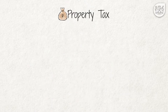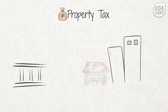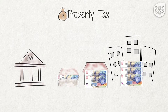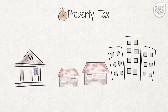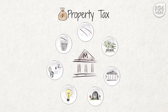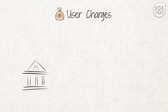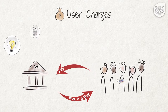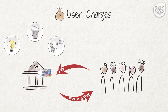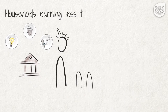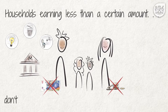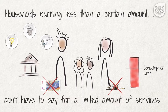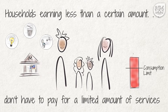Property Tax. Municipalities, other than district municipalities, also impose taxes on properties such as houses and businesses based on their values. Property taxes allow municipalities to subsidize the costs of services. User charges. Municipalities levy and collect fees for the usage of services such as electricity, refuse collection and water and sanitation services. Households earning less than a certain amount, determined by the municipality, don't have to pay for a limited amount of municipal services. However, when consumption limits are exceeded, people have to pay for the extra consumption.